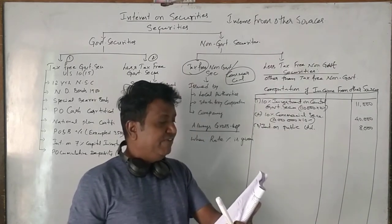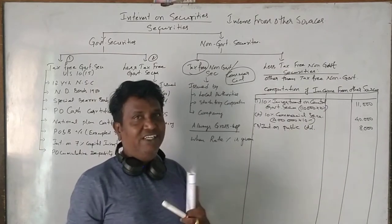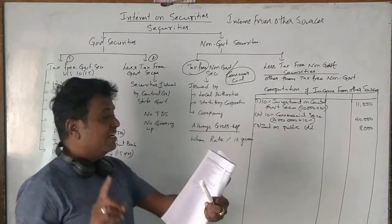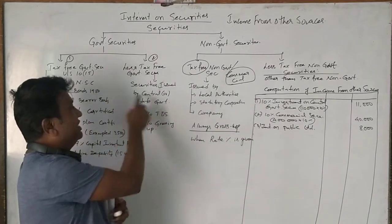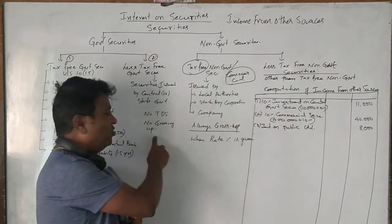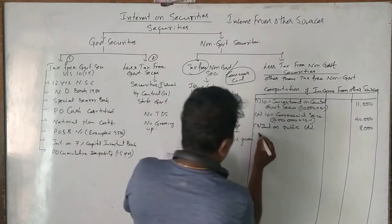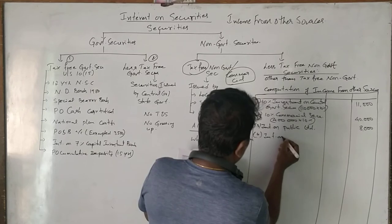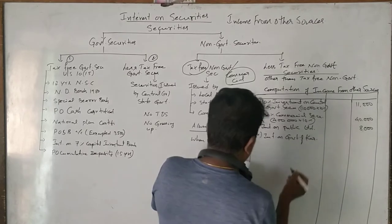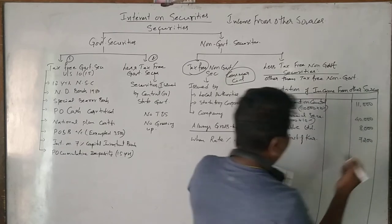₹7,200 received as interest on Karnataka government securities. It is issued by the state government, so no need of grossing up, no TDS system. Therefore, interest on Government of Karnataka is ₹7,200 rupees — fully taxable.